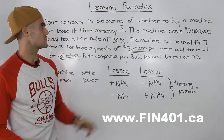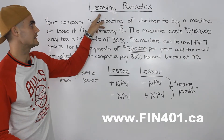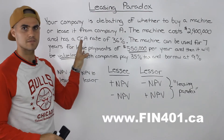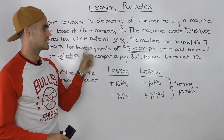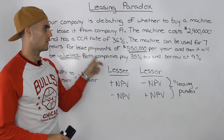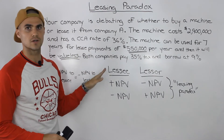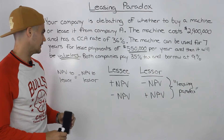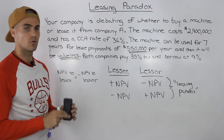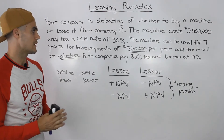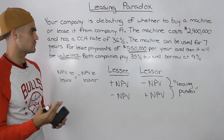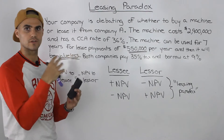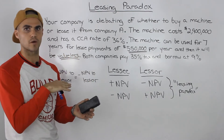Welcome back everybody to part two of the leasing paradox video series. I'm going to keep the same example that we did in the part one video for this video as well. We're just going to be adding on to it and let's do a little review quickly of what we concluded in part one. Basically what we did was we found the NPV of this transaction from both the lessee's point of view and the lessor's point of view.